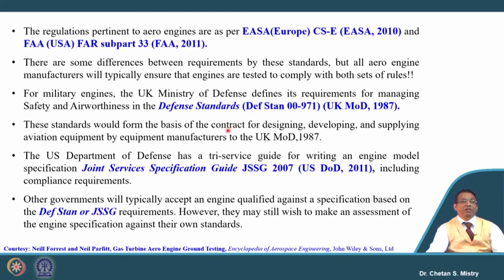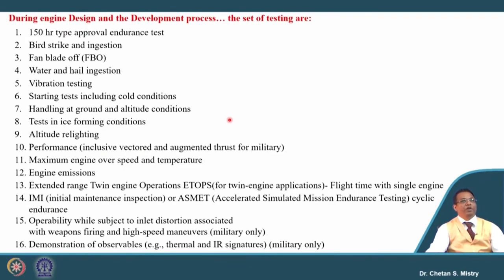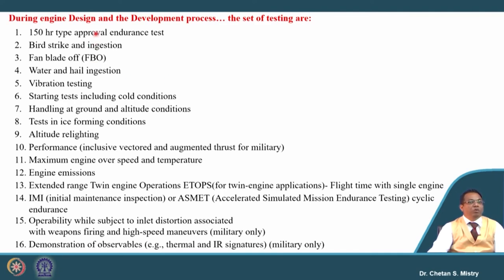For the US, there is a joint service specification guideline updated in 2007 that also meets compliance requirements. Other governments also try to follow these defence standards, with some having their own standards for testing. It all depends on the requirement of the engine and what aircraft it will be fitted to — that decides the certification. All these tests need to be satisfied: 150 hours approval endurance test, bird strike and ingestion, fan blade off, water and hail ingestion, vibration testing, starting tests including cold conditions, handling at ground and altitude conditions, test in ice forming conditions, altitude relighting, and performance testing including augmented thrust when afterburner is incorporated.